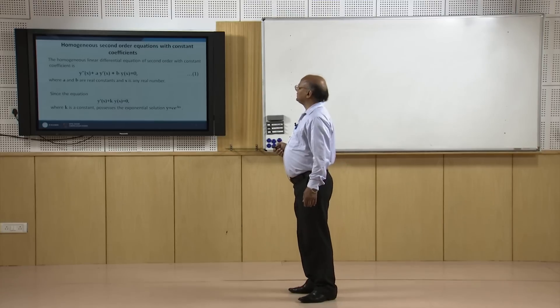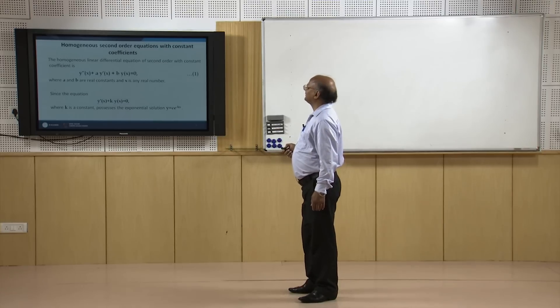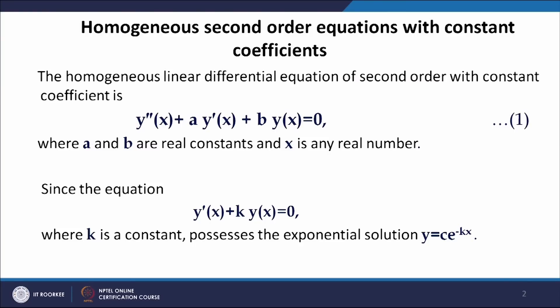Let us define a homogeneous linear differential equation of second order with constant coefficients. Such an equation is given by y''(x) + a·y'(x) + b·y(x) = 0, where a and b are real constants and x is any real number belonging to ℝ.